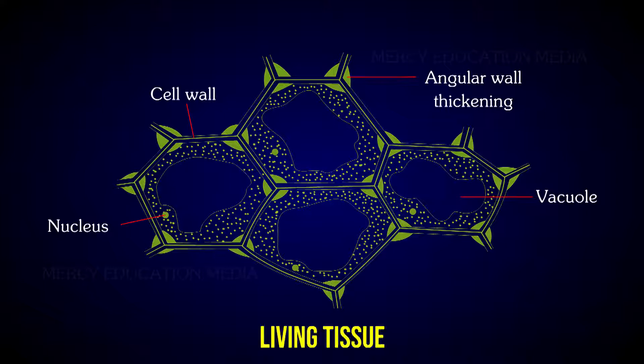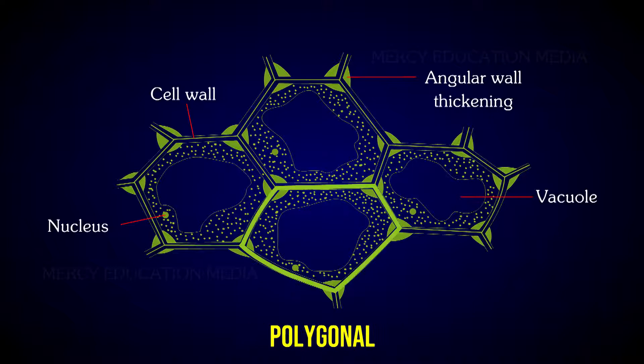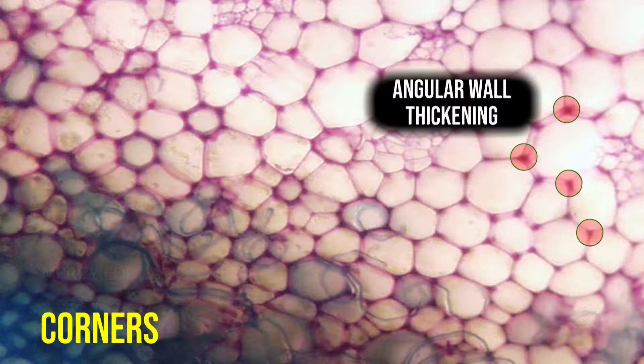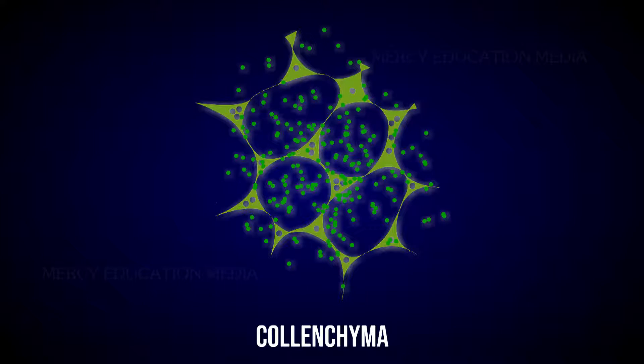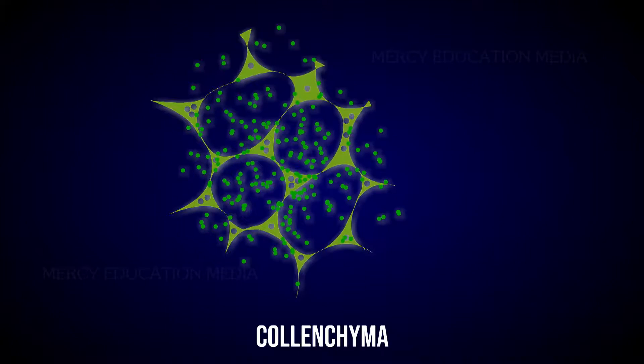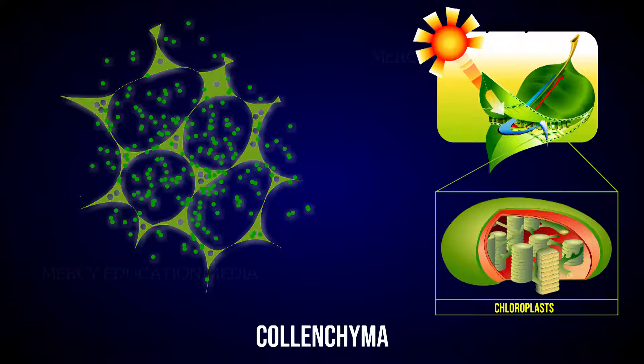Collenchyma is a living tissue. It consists of more or less elongated cells which are polygonal in cross-section. The cell wall is unevenly thickened. The thickening is confined to the corners of the cells. Besides cellulose, the cell wall contains high amounts of hemicellulose and pectin. Collenchyma may contain chloroplasts and carry out photosynthesis.